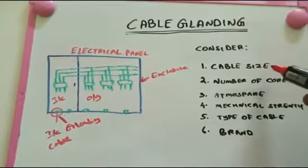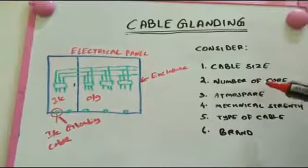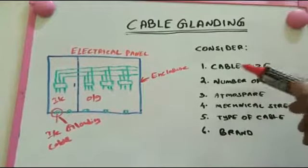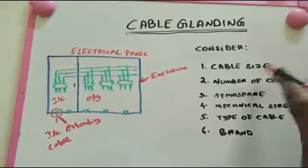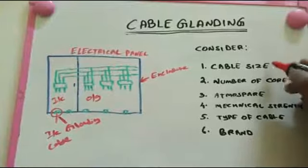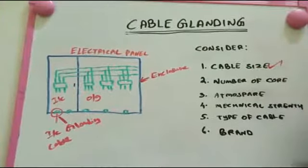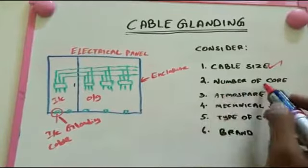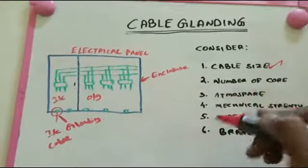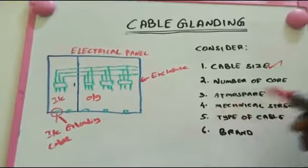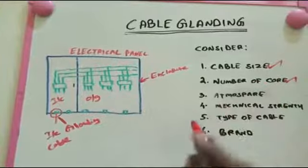Before glanding, there are terms we need to consider. First is cable size — what sizes we have, such as 90 sq mm, 140 sq mm, 120 sq mm, and so on. We first need to think about the cable size. After that, we need to think about the number of cores — one core, four core, two core — what cores are chosen.